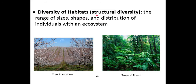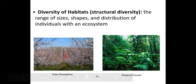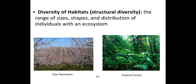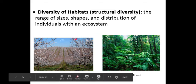Within an ecosystem, there is also diversity of habitat — what we can think of as structural diversity: the ranges of sizes, shapes, and distributions of individuals within an ecosystem. Comparing a tropical rainforest versus a monoculture tree plantation: in the artificial one there is much less diversity of habitat — just the tree and the area under it. In a more natural ecosystem, organisms can survive in the canopy, middle, or understory, offering a much greater variety of habitats.